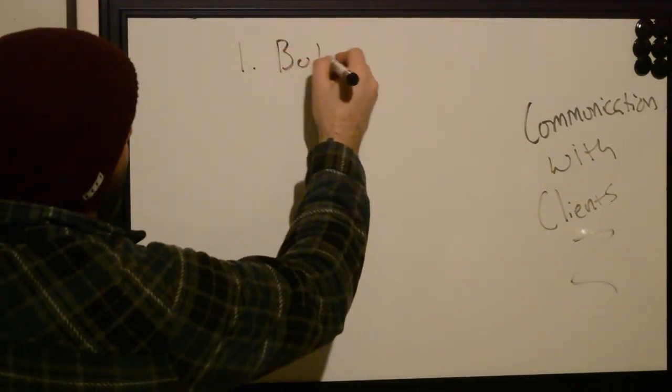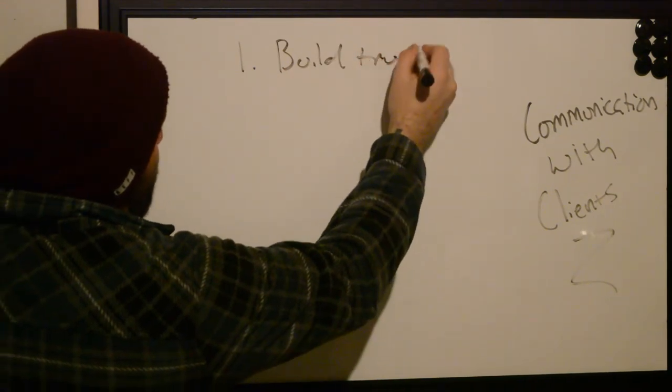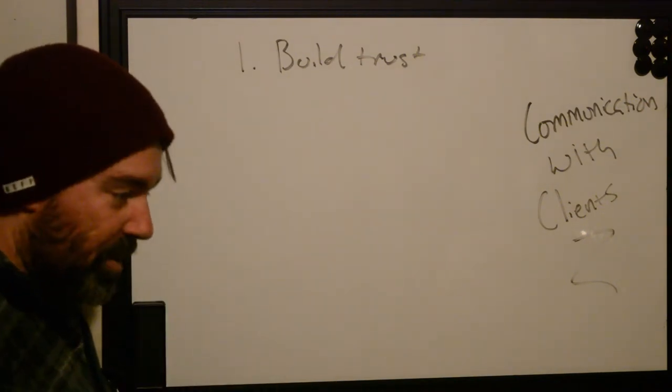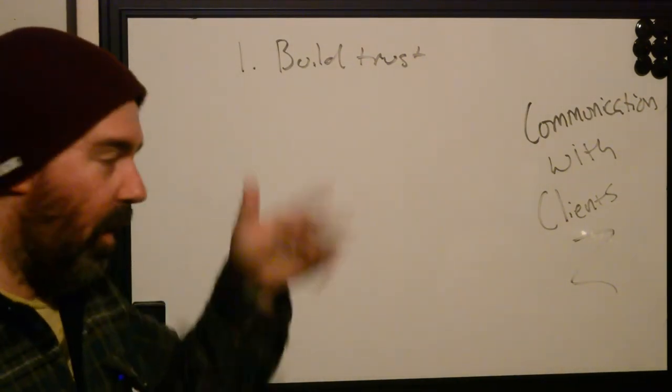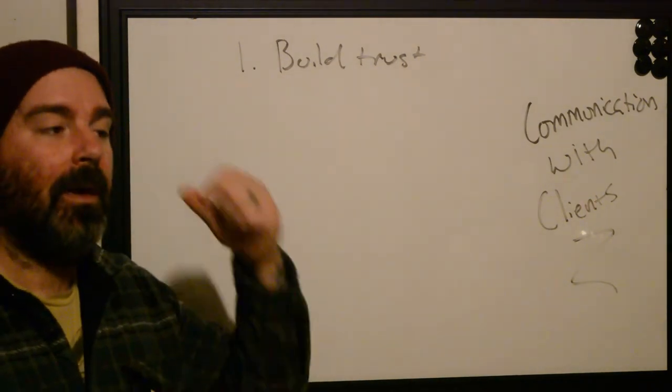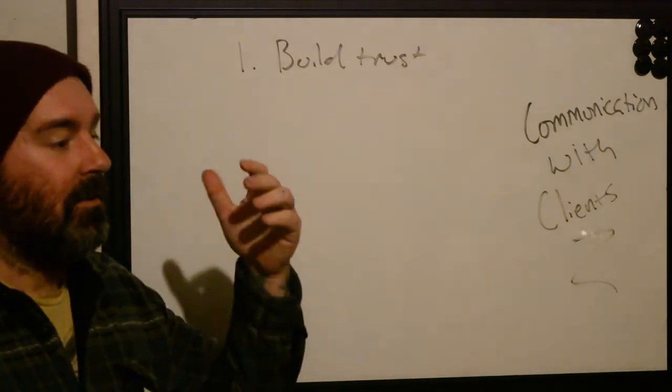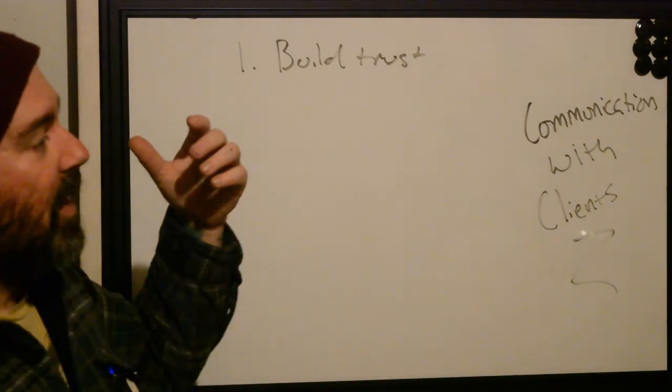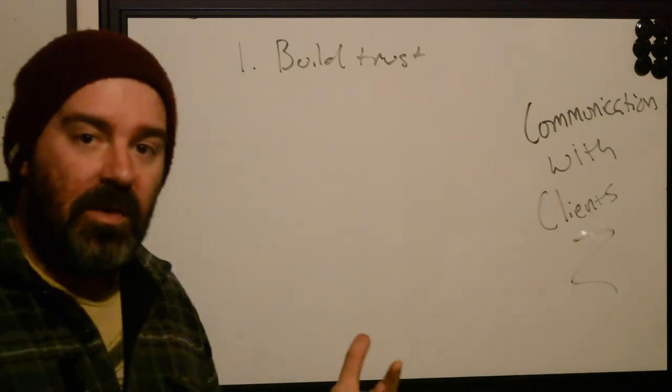Steps to communicating with clients effectively. Number one is you have to build trust. How do we build trust when we're communicating with someone? One is active listening. If somebody is talking with you and they have questions or concerns, you don't just go, 'Oh, don't worry about it, I'm a tattooer, you can trust me.' No, address them, give them reasonable answers, and let them know that you know what you're doing.